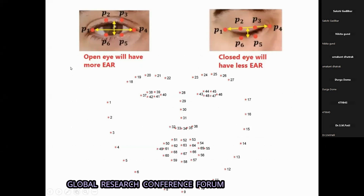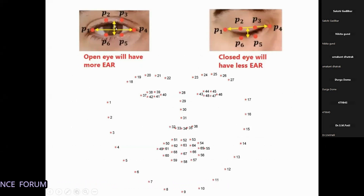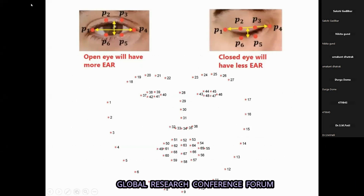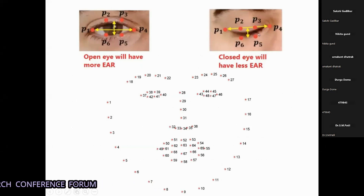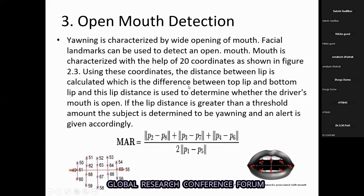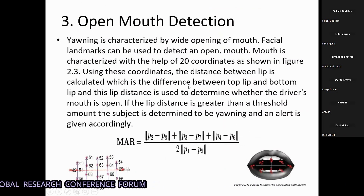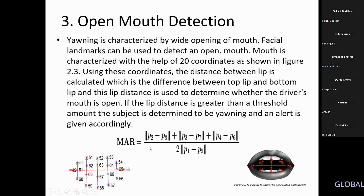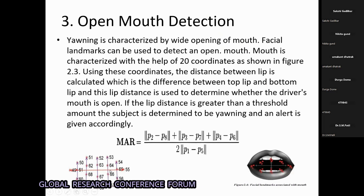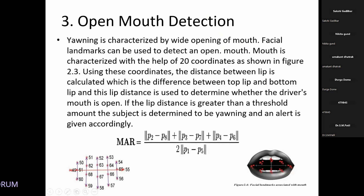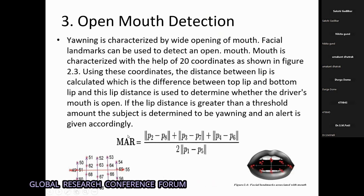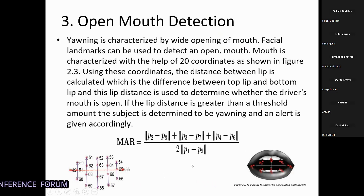We calculate the vertical length using points P1, P2, P3, P5, and P6. If this distance is less than the predetermined distance, the alarm will be raised. The same is true for mouth detection — this is the formula for mouth detection using the points placed by the 68 facial landmarks with the dlib library. If the vertical length at points 50, 61, 60, and so on increases beyond the predetermined value, it also raises the alarm.